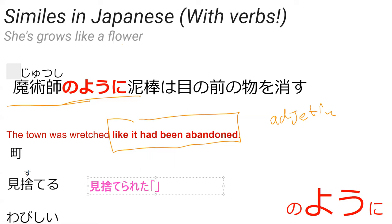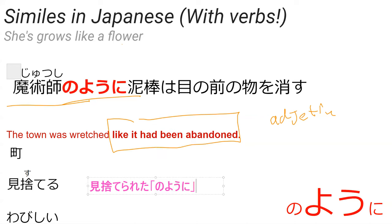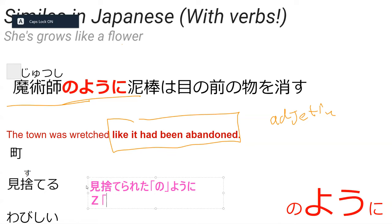Now, how do we add 'like' to 'misuterareta'? We put 'no yōni' right after it. What does 'no' mark? 'No' is a kind of glue — it connects things. But what kinds of things? It can't connect verbs, and it's not really used to connect adjectives either.